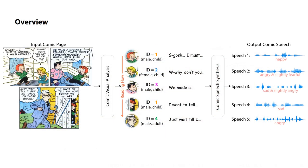Here is an overview of our approach. Given a digitized comic page, our approach aims to synthesize speeches consistent with the visual observations to narrate the page in a lively manner. Our method proceeds in two phases.